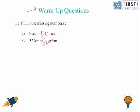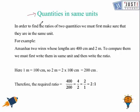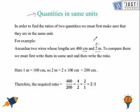Now we move to today's topic: quantities in the same units. The question says Amman has two wires — the length of the first wire is 400 centimeters and the second is 2 meters. Both wires are given in different units. To compare them we must first change to the same unit. Since one meter is 100 centimeters, 2 meters equals 200 centimeters. We convert 2 meters to 200 centimeters so both lengths are now in centimeters.